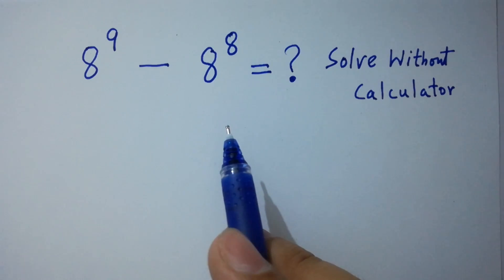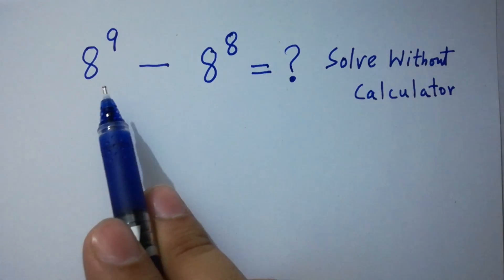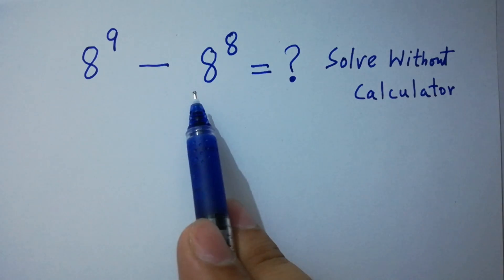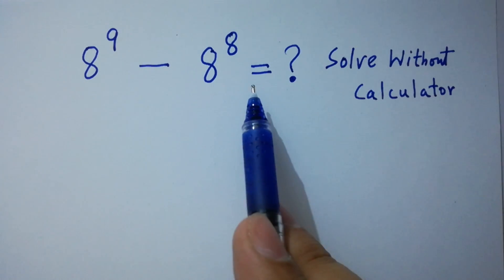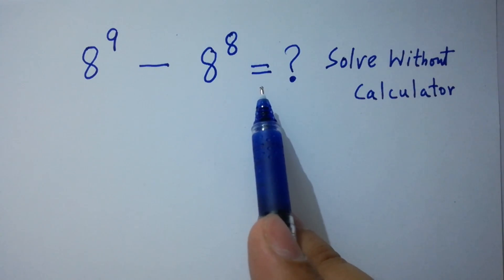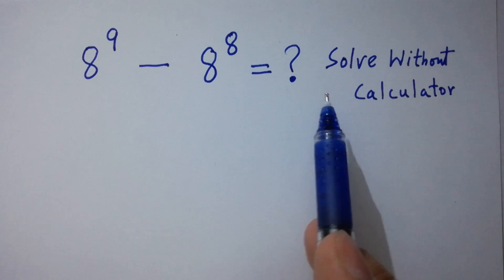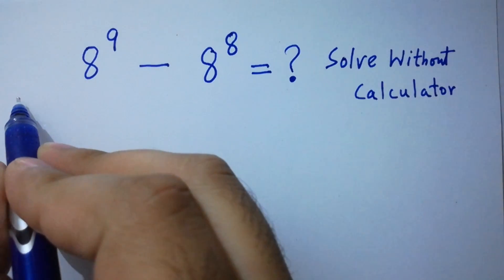Hello friends. 8 to the power 9 minus 8 to the power 8 equals what? Solve without calculator. Let's have a solution.